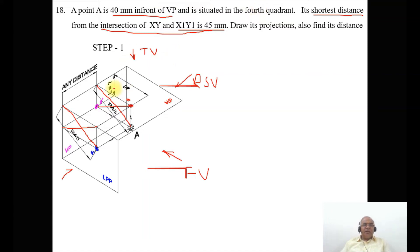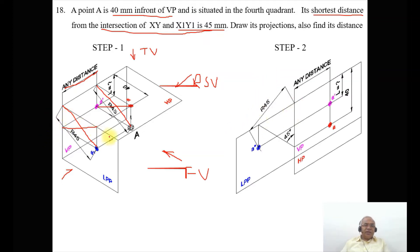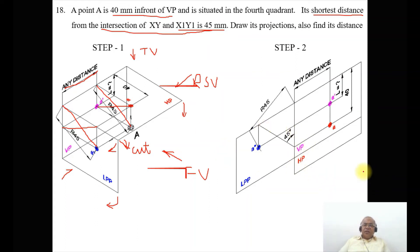Since we don't know the distance with respect to the profile plane, we can take any distance — that is why it is written as 'any distance.' In step two, we cut the planes here and rotate the horizontal plane in one direction, the vertical plane in another, and LPP towards the left side. Both VP and HP will be overlapping, and LPP will be aligned with the vertical plane. As the planes rotate, the images on HP, VP, and LPP are also rotated.